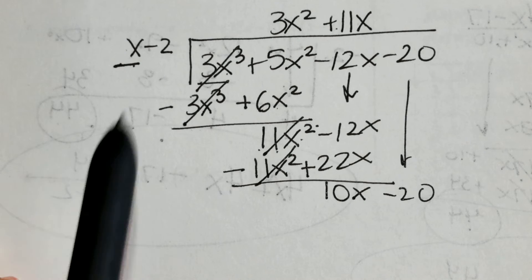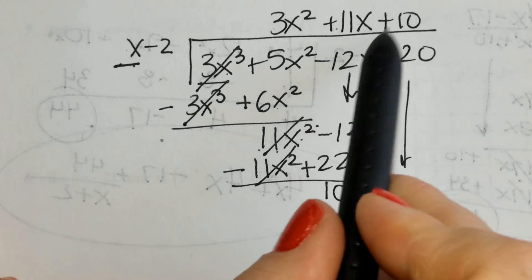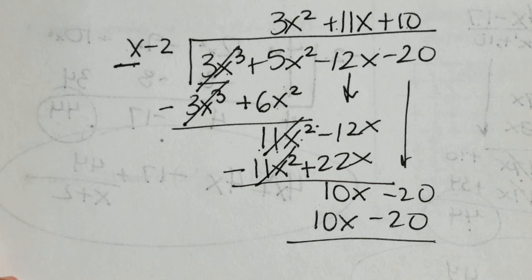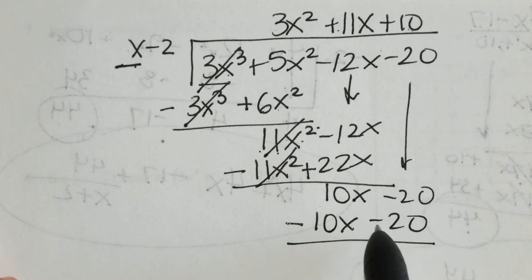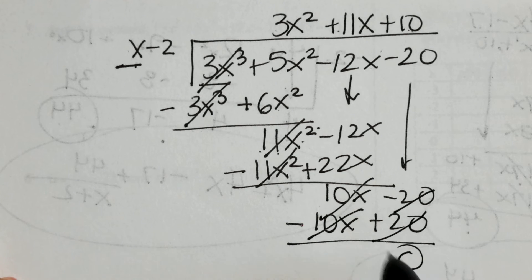Final steps here. x times what is 10x? Selected 10. Now distribute through. After distributing, change the signs in the 2nd row and add straight down. Everything cancels. I have a 0 remainder.